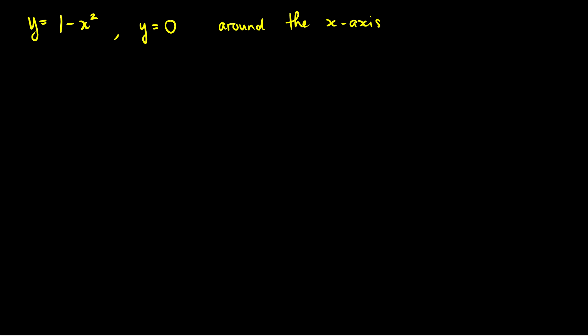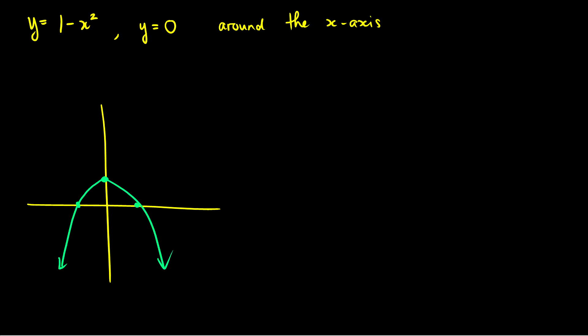Let's do another example: y equals 1 minus x squared, y equals 0, rotated around the x-axis. We graph this: when x equals 0, y equals 1; when x equals 1 or negative 1, y equals 0. This is a parabola between the curve and the x-axis. We don't care about anything past negative 1 or 1 — we just rotate this part of the parabola around the x-axis. When rotated, we get a football-shaped or eye-of-Sauron-shaped solid.